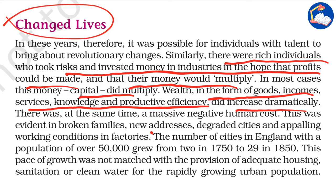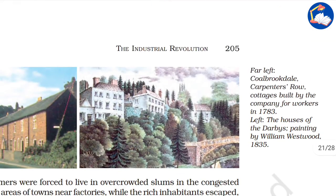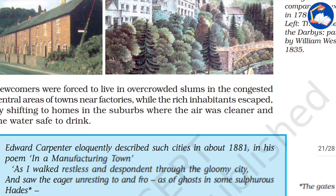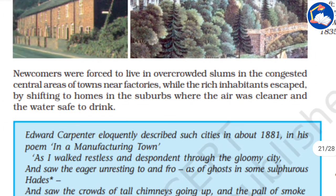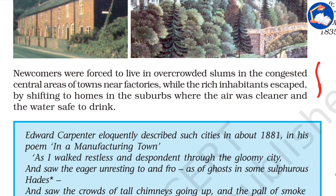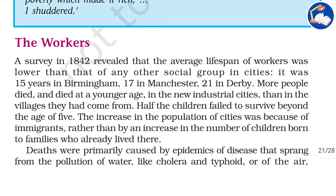The number of cities in England with a population of over 50,000 grew from two in 1750 to 29 in 1850. There were also serious problems related to population — newcomers were forced to live in overcrowded slums in congested central areas of towns near factories. We will now see the life of workers.